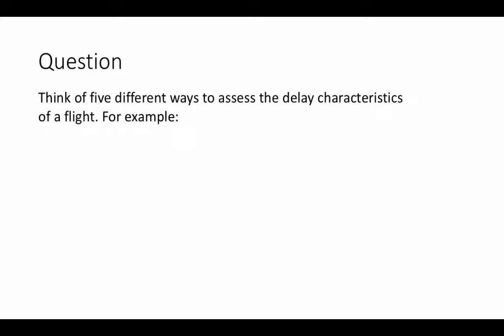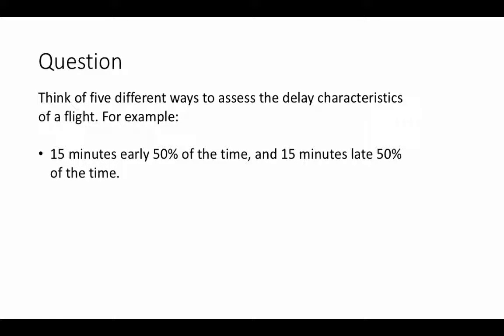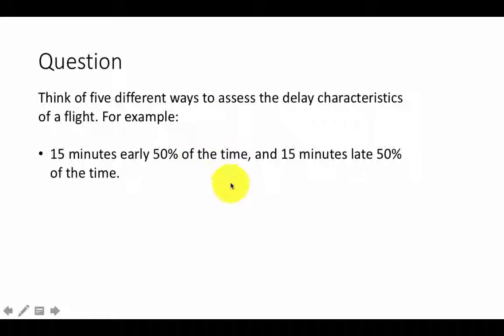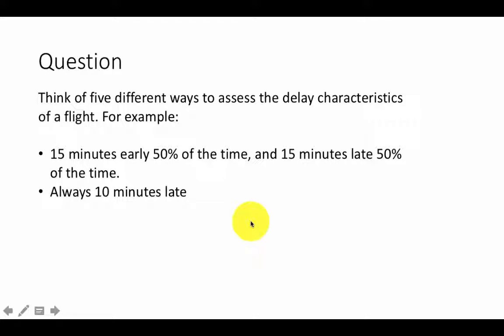Let's apply some of what we have learned. Think of five different ways to assess the delay characteristics of a flight. This is not a programming question — it's about variability in data. For example, you may have flights which are on average 15 minutes early half the time and 15 minutes late the other half. On average this flight is exactly on time, but in reality it's almost never going to be on time.